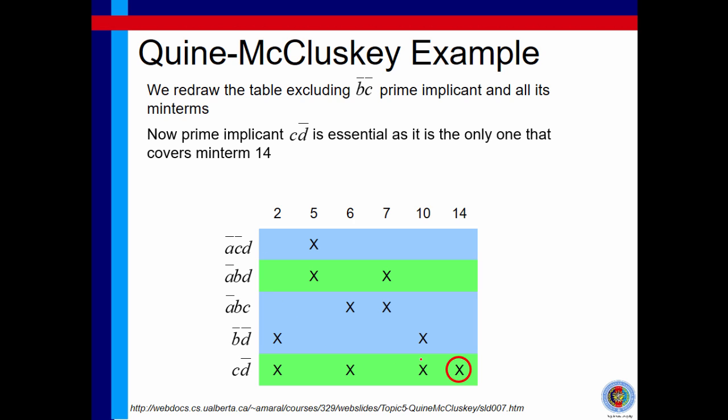As we deduced before, minterm 14 is only covered by essential prime implicant c d bar. We have to take this prime implicant, making it essential. By taking this implicant, we also take this minterm, this minterm, and also this minterm.